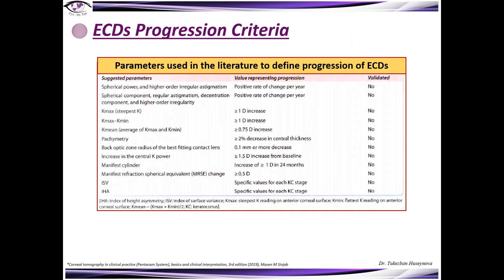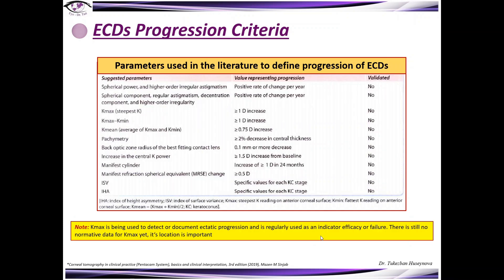This table summarizes all parameters used in the literature to define progression of ectatic corneal diseases. One of these is Kmax, and the difference between Kmax and Kminimum, which normally should be less than one diopter on follow-up for ectatic disorders. Kmax is used to detect and document ectatic progression and is regularly used as an indicator of efficacy or failure after therapy for ECDs. There is still no normative data for Kmax, and its location is important.